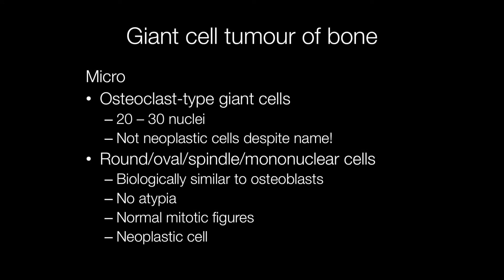Histologically, giant cell tumours of bone contain lots of giant cells and these are osteoclast-type cells with 20 to 30 nuclei. But these are not the neoplastic cells, despite the name. So the term osteoclastoma is a bad name for a giant cell tumour because, although there are lots of osteoclast-like cells, these are not the neoplastic cells.